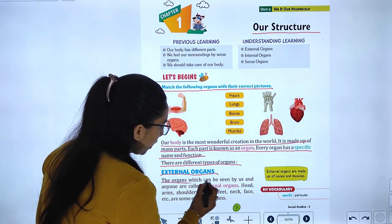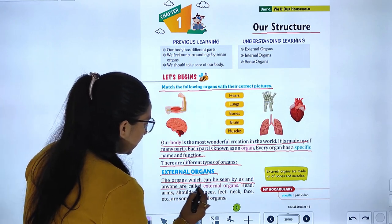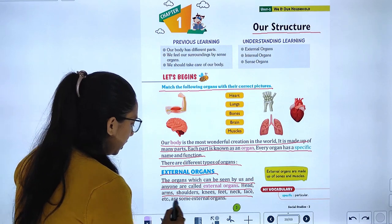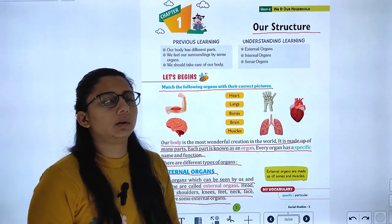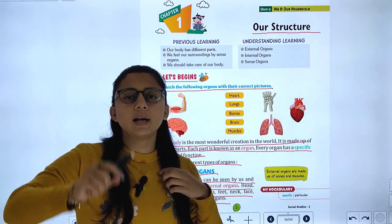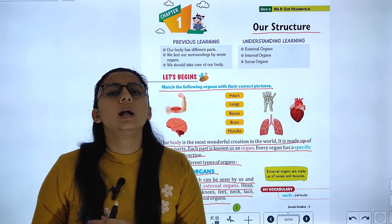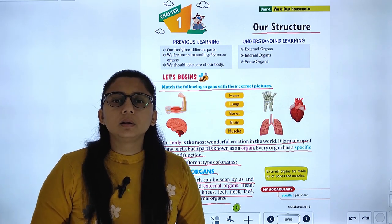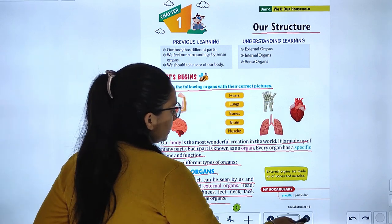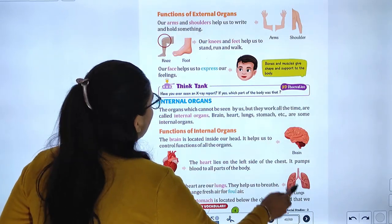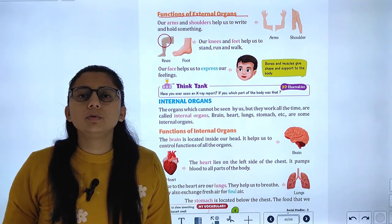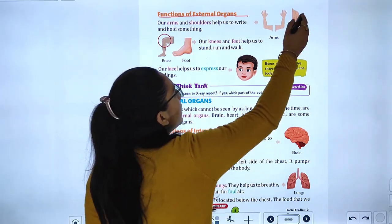The organs which can be seen by us are called external organs. Head, arm, shoulder, knee, neck, face, etc. are some external organs. Here some external organs are given along with their functions.